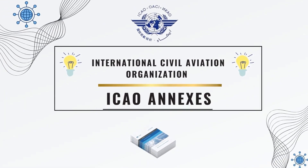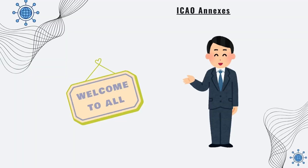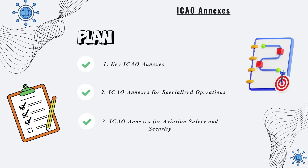Welcome. In this video, we will provide an overview of the 19 ICAO Annexes, which are Standards and Recommended Practices (SARPs) for international aviation. We will begin by reviewing the key ICAO Annexes, then discuss the ICAO Annexes for specialized operations, and finally explore the ICAO Annexes for aviation safety and security.